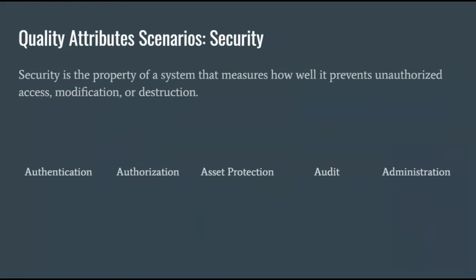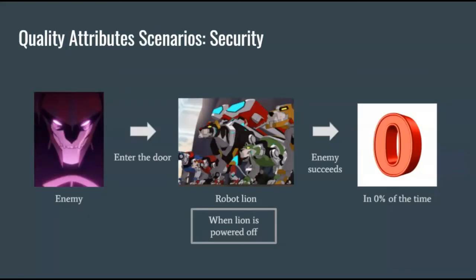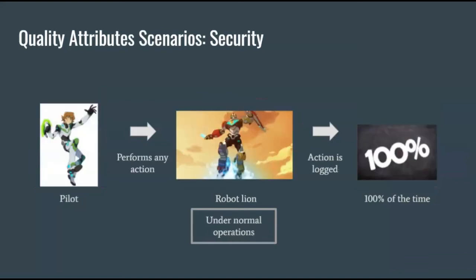Nowadays, with all the cracking and hacking going on, security — and in particular cyber security — is very important. There's an entire field of IT that focuses on security. Quality attribute scenarios involving security usually revolve around the five A's: authentication, authorization, asset protection, audit, and administration. An example: if an enemy tries to enter the door of the robot lion when it is powered off, the enemy succeeds 0% of the time. Here is another example: if a user performs any action on the robot lion, under normal operations, that action is logged 100% of the time.